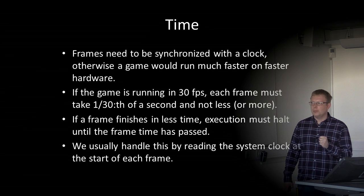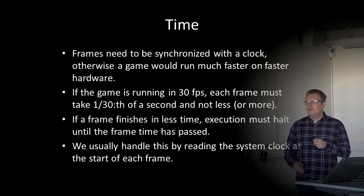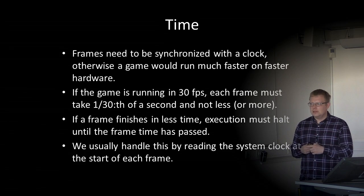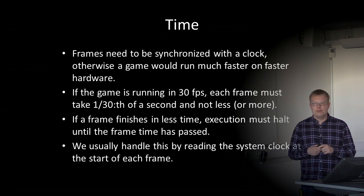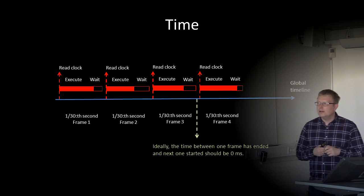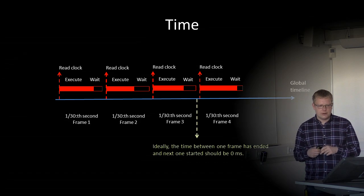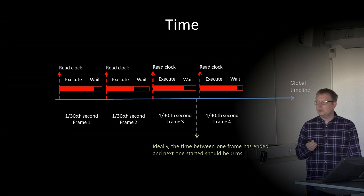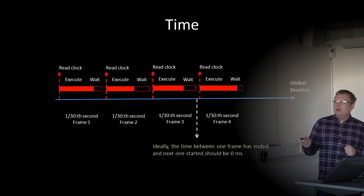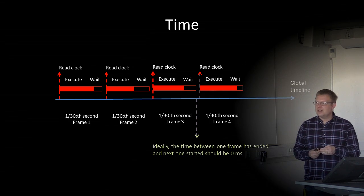If a frame finishes in less time, we can hold execution until the frame time has passed. If it takes more time, the game will start to lag. To synchronize time, we usually read the system clock at the start of each frame so we know exactly when the frame should start and how long it should take. We read the clock, execute the code in frame one, wait if necessary, then execute frame two, and so on — ensuring all frames take one-thirtieth of a second.